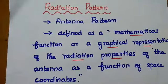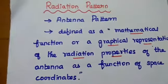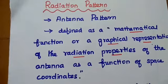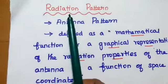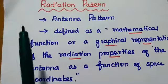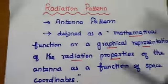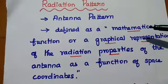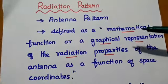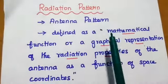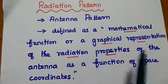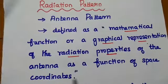Radiation pattern is also called as antenna pattern. This antenna pattern is mainly used to describe the radiation behavior of an antenna. Radiation here means the emission or reception of electromagnetic waves in the antenna. Pattern means it can be a mathematical function or a graphical representation of the radiation properties. So radiation pattern is defined as a mathematical function or a graphical representation of the radiation properties of the antenna as a function of space coordinates.